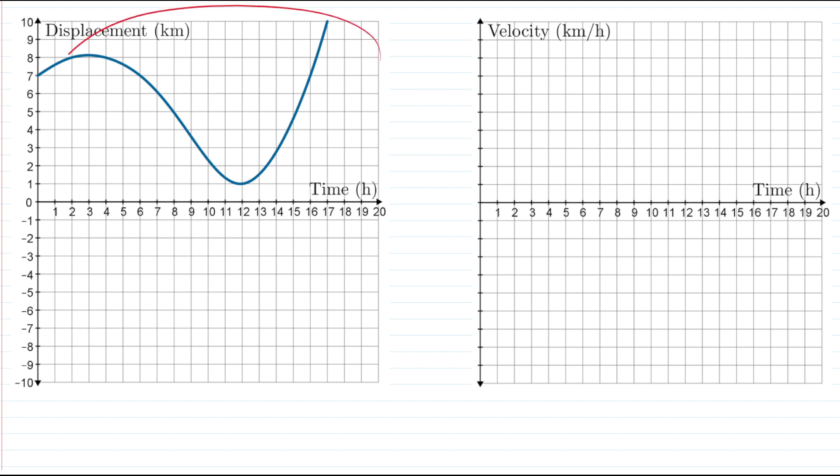As you can see here our displacement time graph is curvy. So how do we draw the velocity time graph for a displacement time graph that looks something like this?